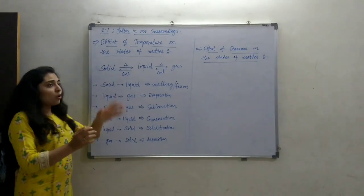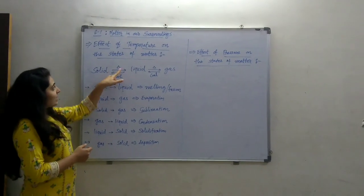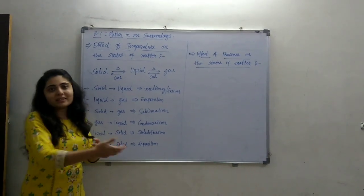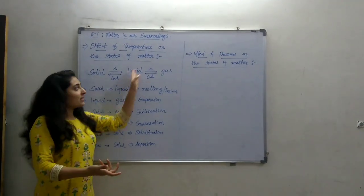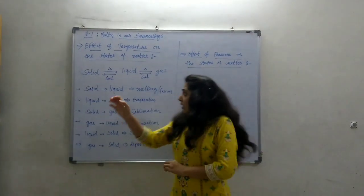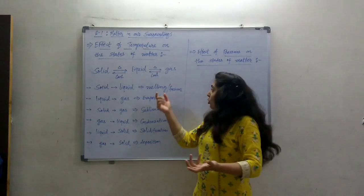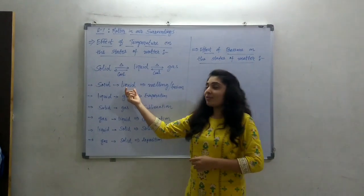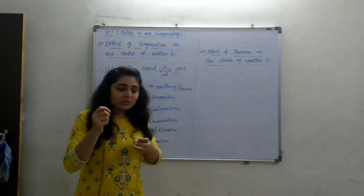When the solid is heated — this delta symbol shows the heating — the solid melts and converts into liquid state. And when liquid is heated, it will convert into gaseous state. The process of converting from solid to liquid is called the melting process, or also fusion. The question is: why does solid convert into liquid by heating?